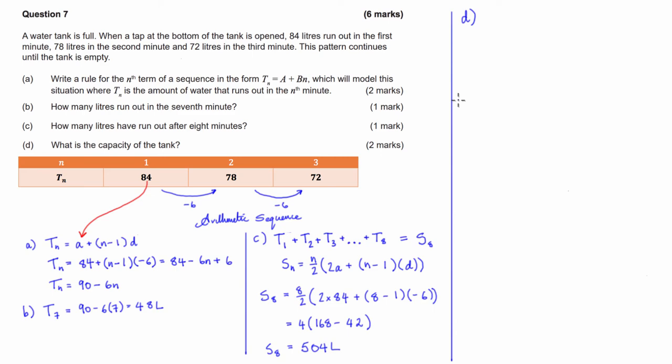So on to part D, which is asking us for the capacity of the tank. Now this is a bit of a tricky one, sort of conceptually, to wrap your head around. The capacity of the tank is going to be reached when the amount that's coming out of the tank each minute would equal 0, because after that there is no more water left in the tank. So first of all, we have to work out what n corresponds to a t_n of 0. At what minute is the flow coming out of the tank equal to 0? So basically, we have to figure out what t_n equals 0. In this case, we're looking for n.